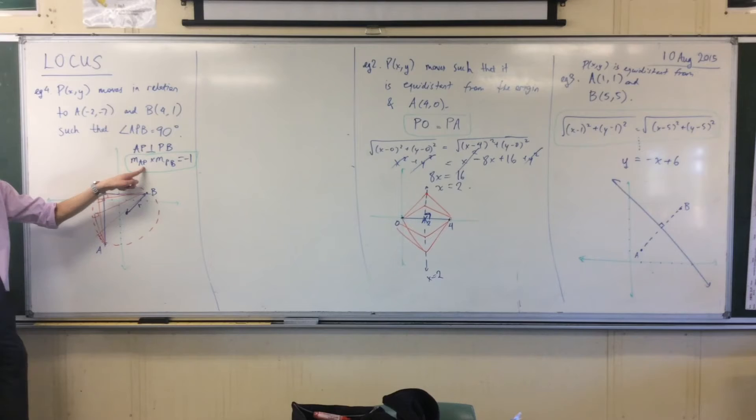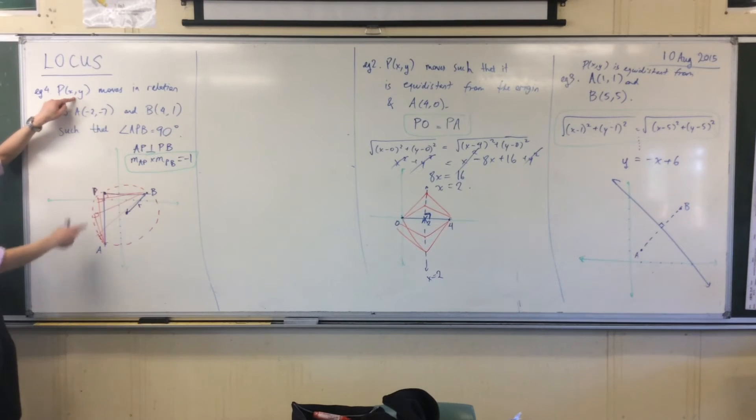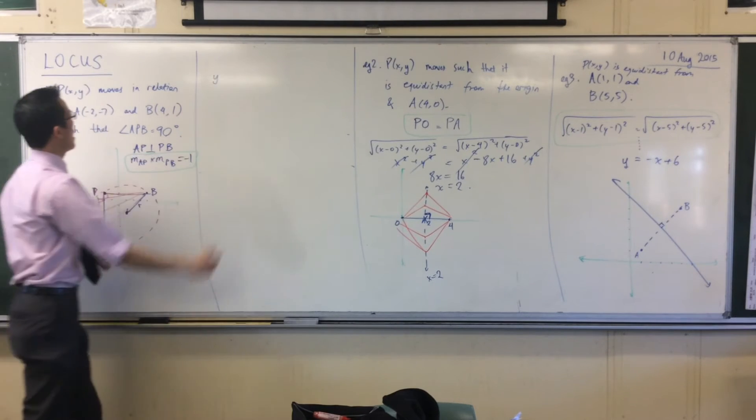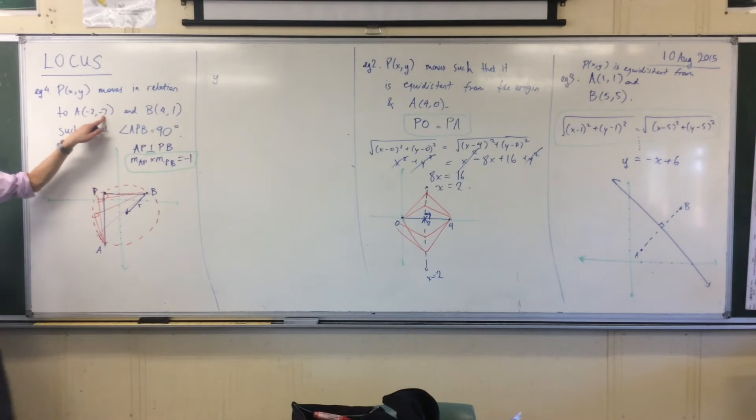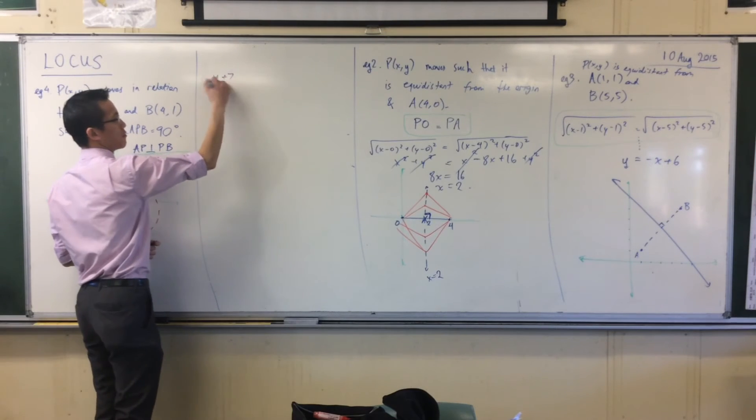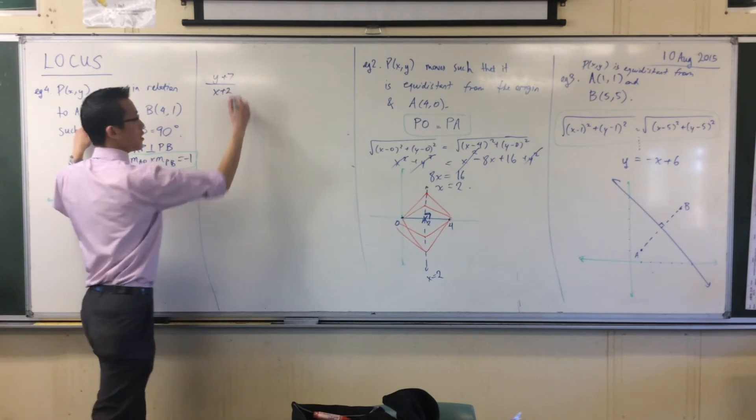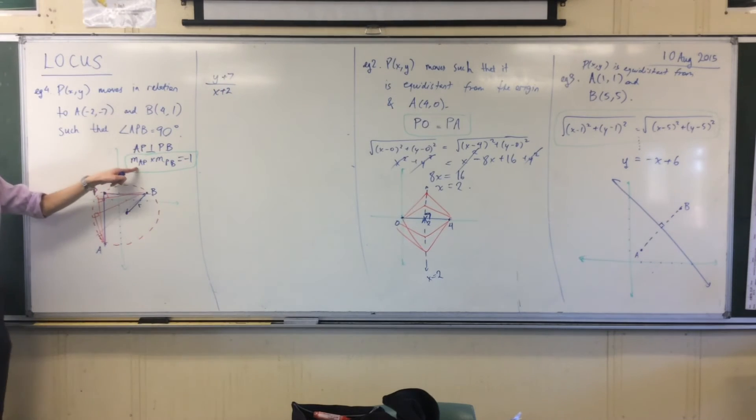It's rise over run, isn't it? Well, for that particular one, it could be anywhere. I just picked out one example. If this is A and this is P, I take the gradient to be y plus 7, there's rise, and run will be x plus 2. There's the gradient of AP.